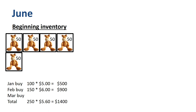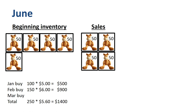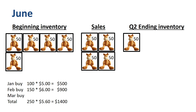Onward to June. The ending inventory of May is the beginning inventory of June. Four boxes of toy giraffes are sold — sales are really picking up pace. The ending inventory is just one box of 50 units. We once again apply LIFO — last in, first out — and assume that the newest inventory gets sold first. What remains in inventory at the end of June is just 50 units from the January buy, 50 units at $5 each, $250 in total.